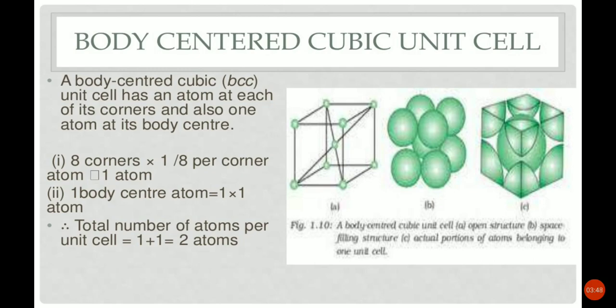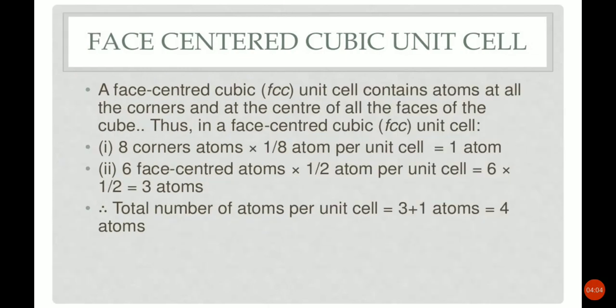So 2 is the number of atoms in a body-centered cubic unit cell or BCC. You can see the picture or diagram of the BCC unit cell. Now we will discuss the face-centered cubic unit cell, or FCC. A face-centered cubic unit cell contains atoms at all the corners and at the center of all the faces of the cube.